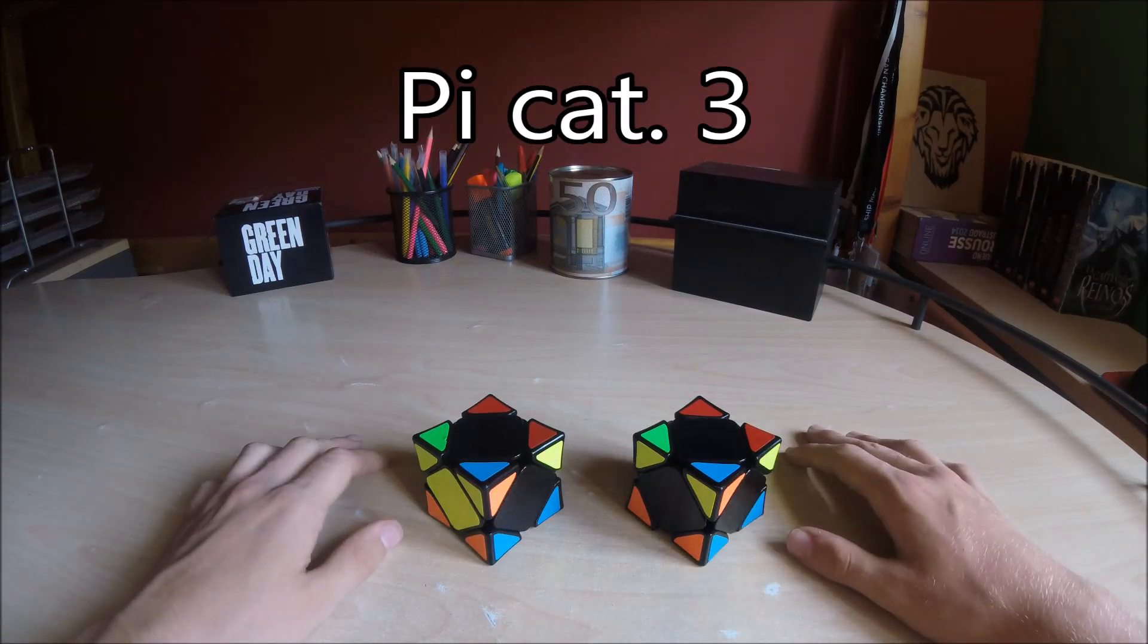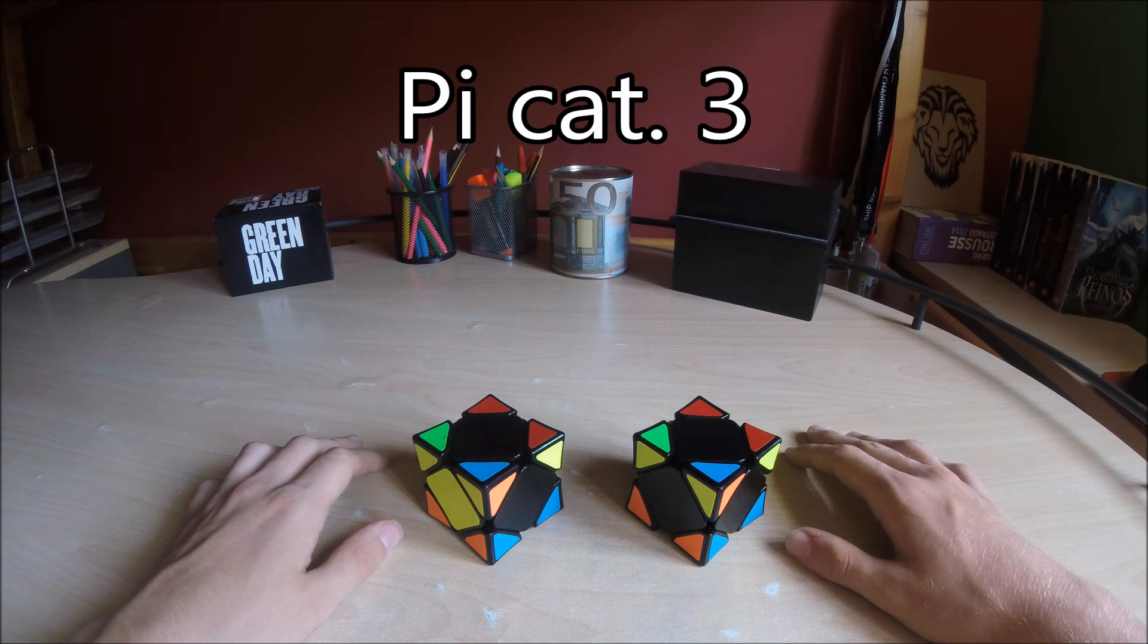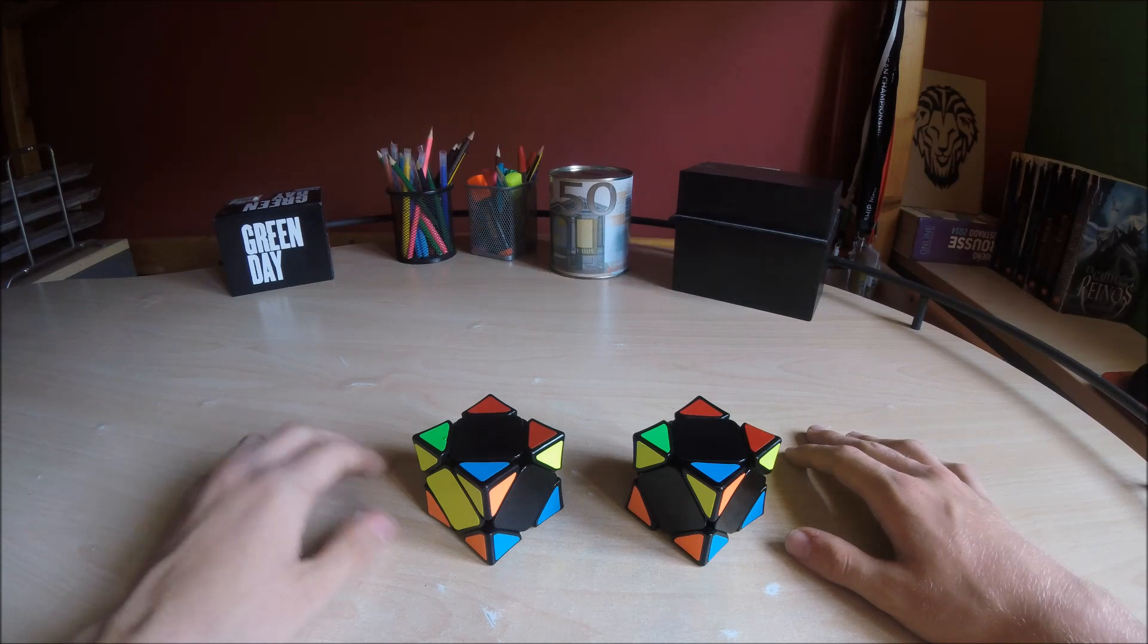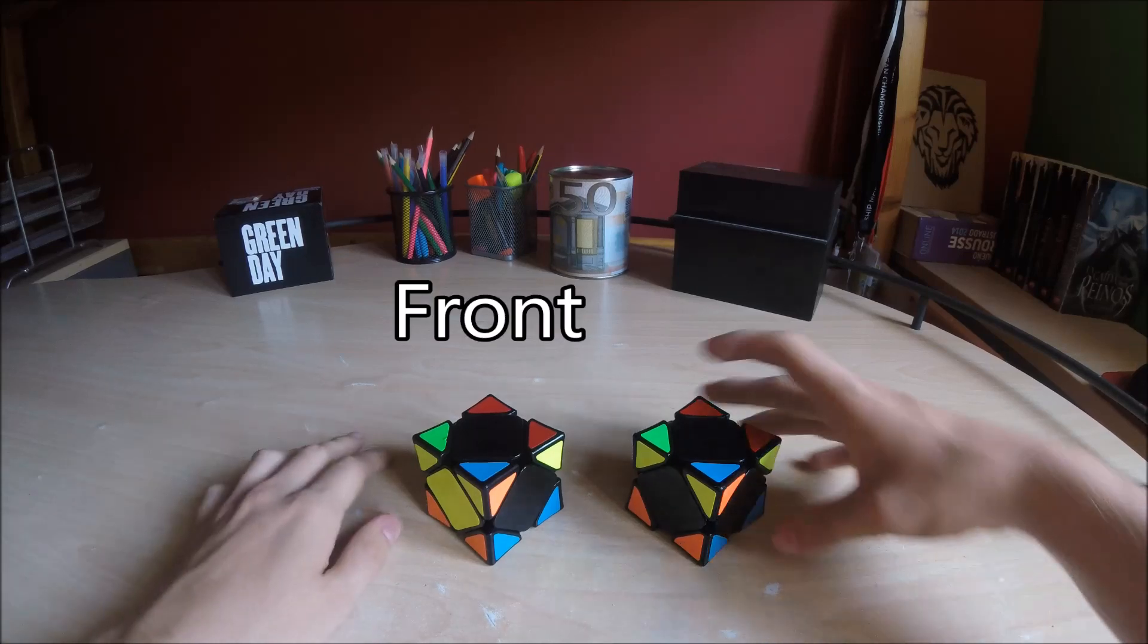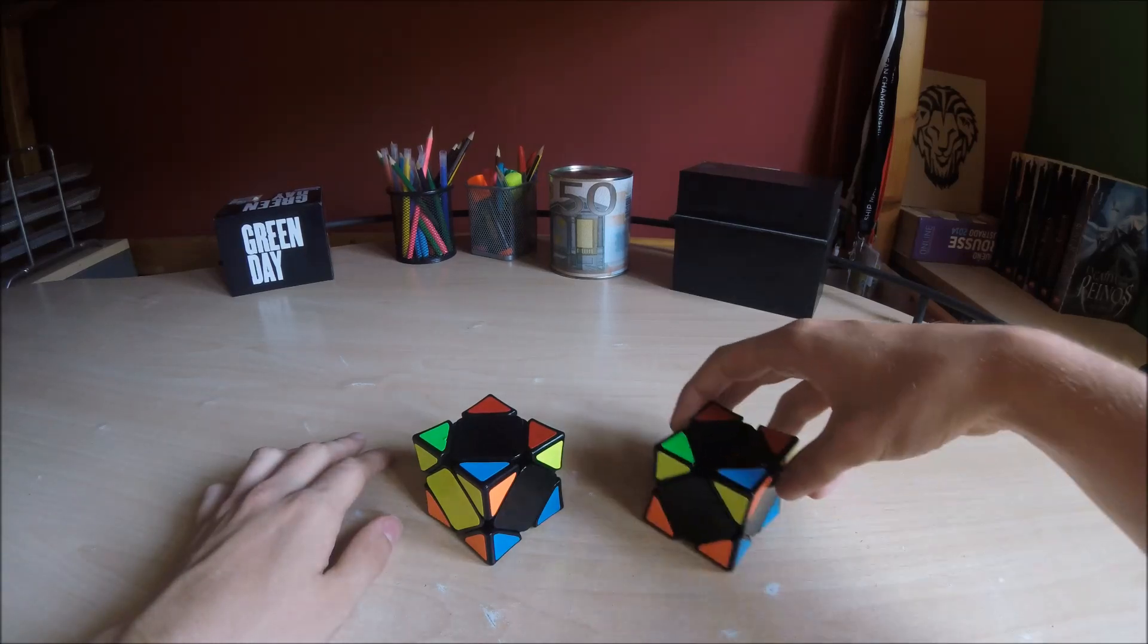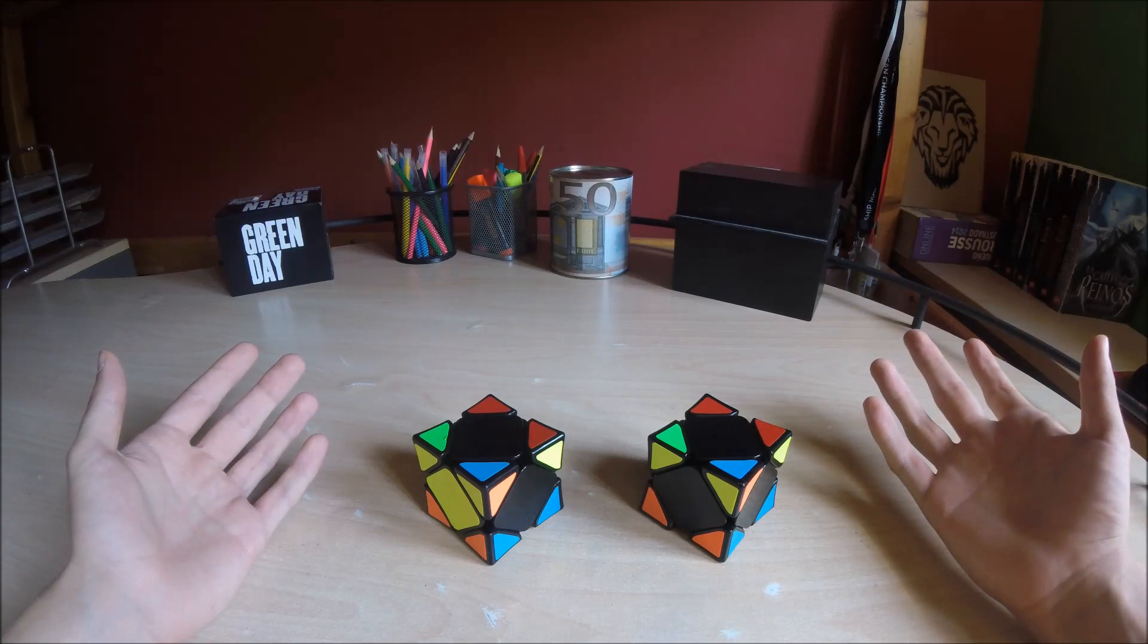And the Pi case category 3. There are also 24 cases and 2 patterns: if adjacent centers are on the front or in the back. There are also 12 cases in each one.